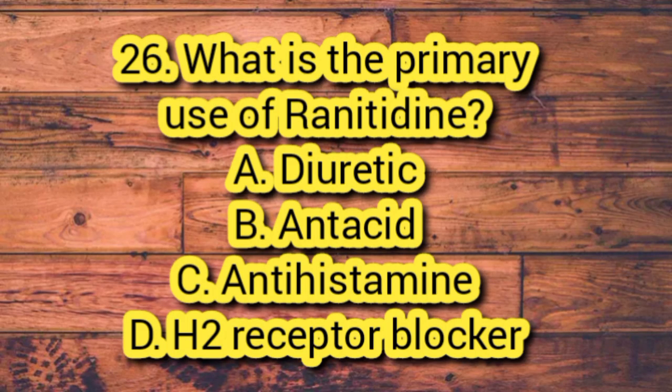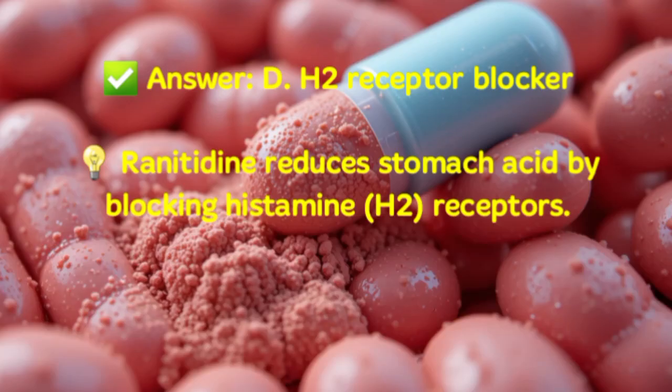Question 26. What is the primary use of ranitidine? A. Diuretic. B. Antacid. C. Antihistamine. D. H2 receptor blocker. Answer: D. H2 receptor blocker. Ranitidine reduces stomach acid by blocking histamine H2 receptors.